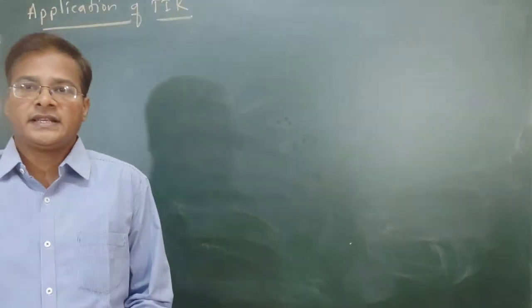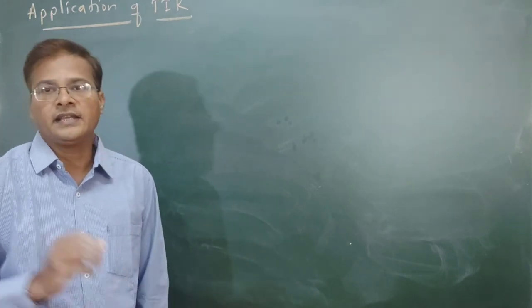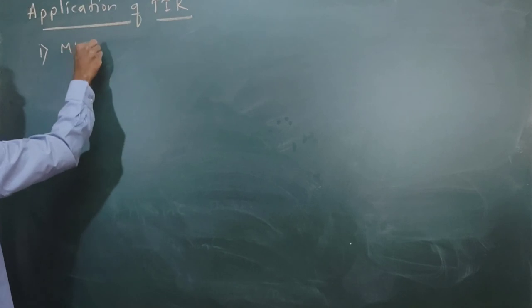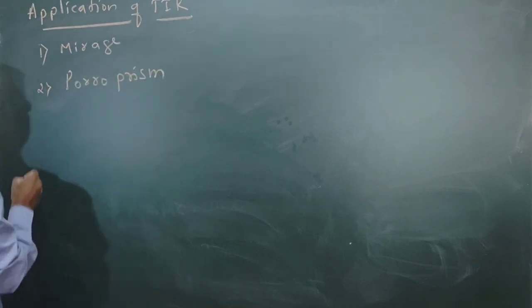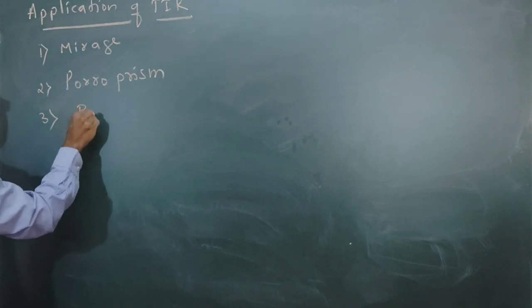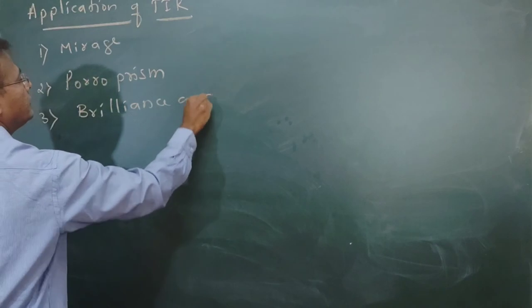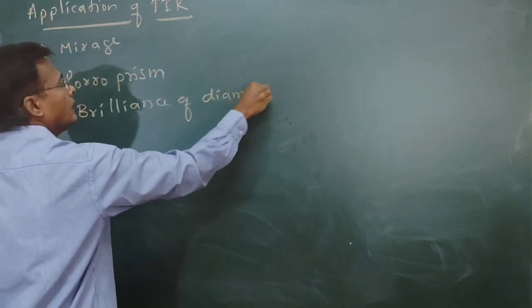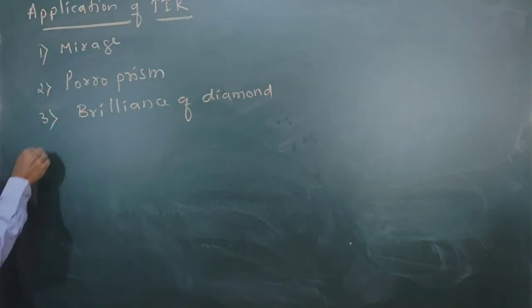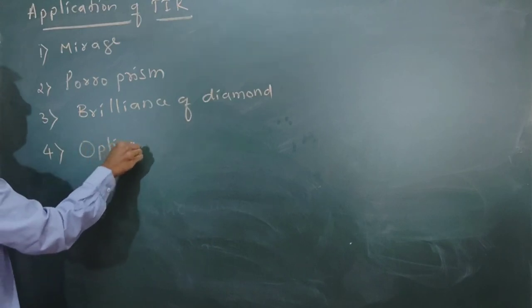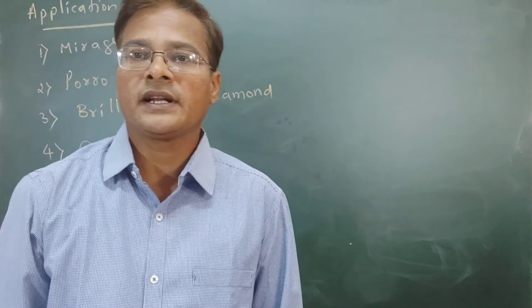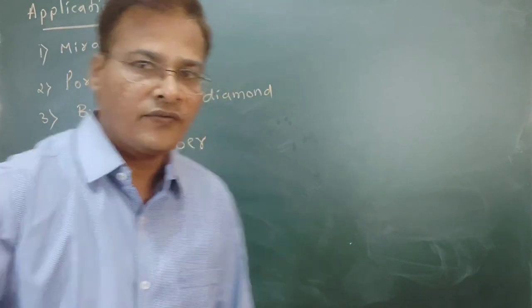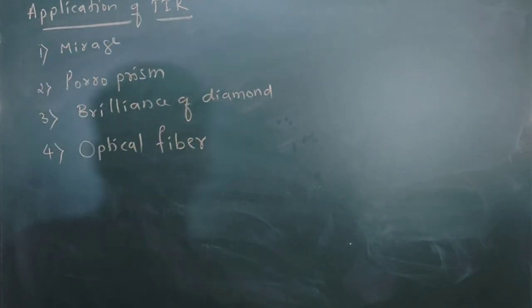Now we can see the applications of total internal reflection. There are applications: first is mirage — mirage is one example of total internal reflection. Second is Porro prism. Third is sparkling or brilliance of diamond. And the next application is optical fiber. These are the applications of total internal reflection. We will understand them one by one. First, mirage — what is a mirage?